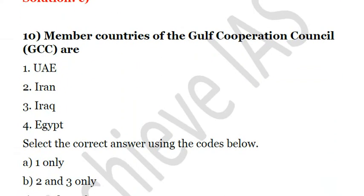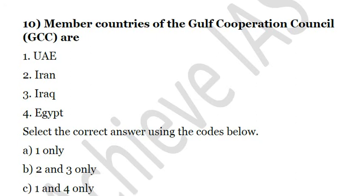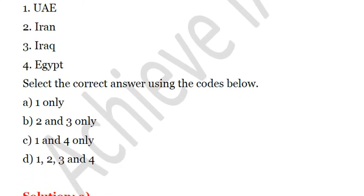The ninth question: Member countries of the Gulf Cooperation Council are — First, UAE. Second, Iran. Third, Iraq. Fourth, Egypt. The Gulf Cooperation Council includes UAE, Saudi Arabia, Qatar, and Kuwait. Iran, Iraq, and Egypt are not part of it. So the answer is A — UAE only from the given options.